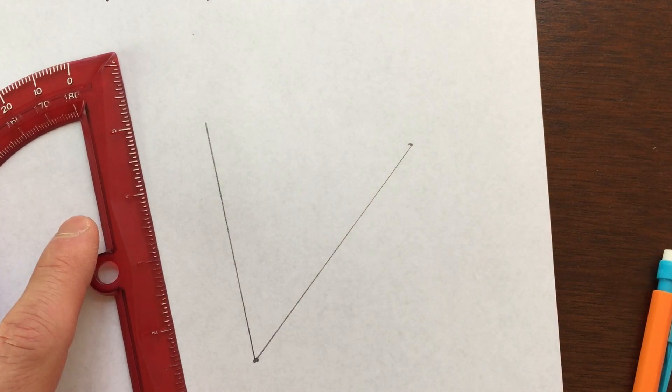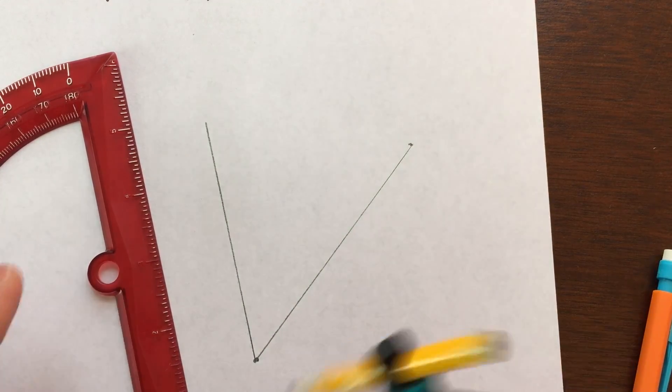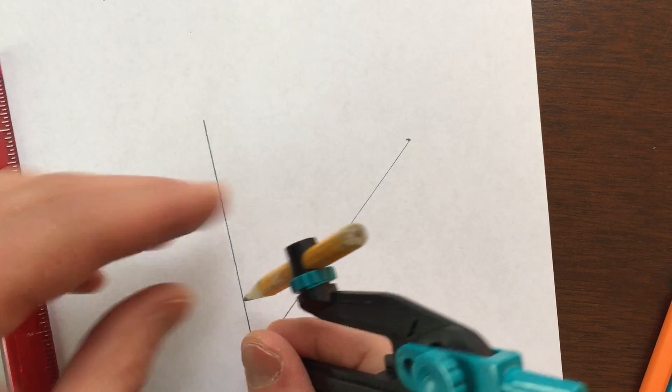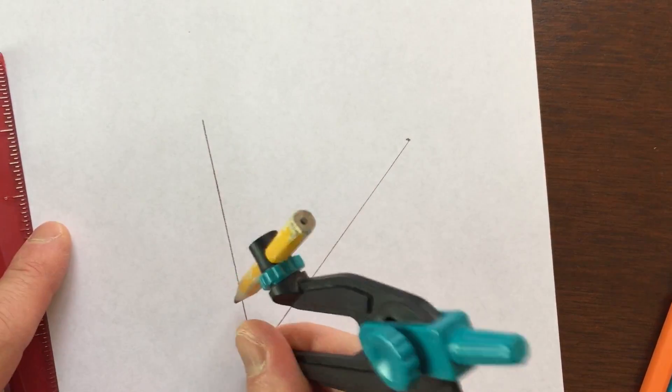And I'm going to divide this line up into three parts. Now if I wanted to divide this up into four parts, I would divide this line into four parts, and so on. So let's go ahead and divide it up into three congruent parts.